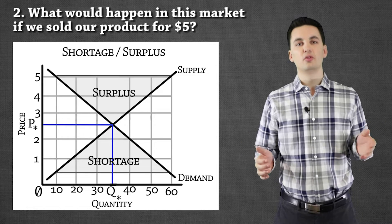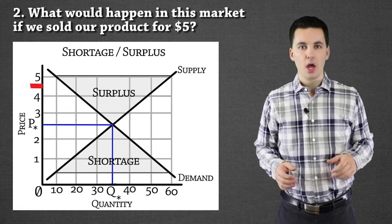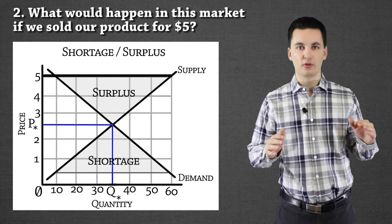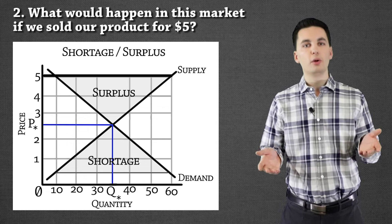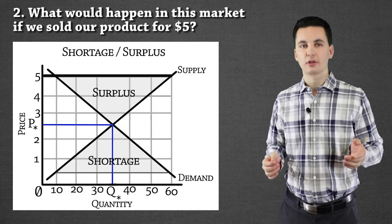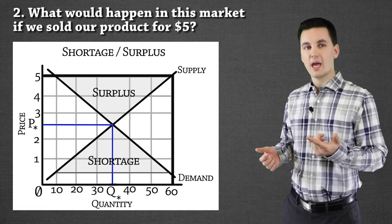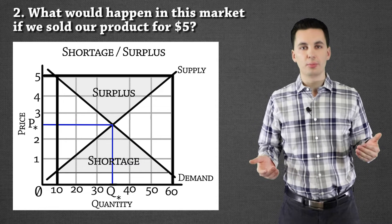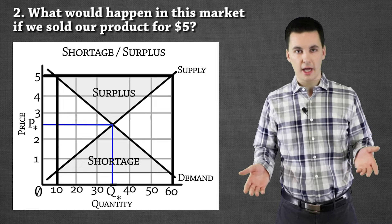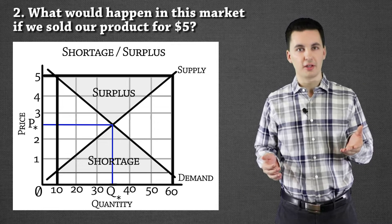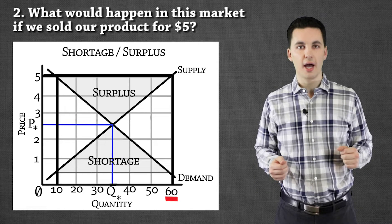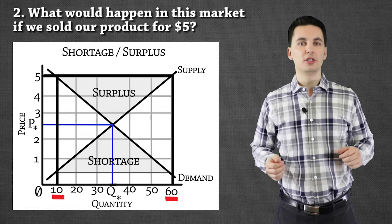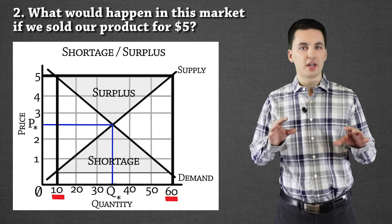The next question asks what would happen if we decided to sell at $5. Again, draw that horizontal line across at the $5 range. We can see supply is currently at 60, but demand is only at 10. So we're going to have a surplus — 50 extra units. Supply is 60, demand is 10, so I'll only sell 10 of those and have 50 units left over.